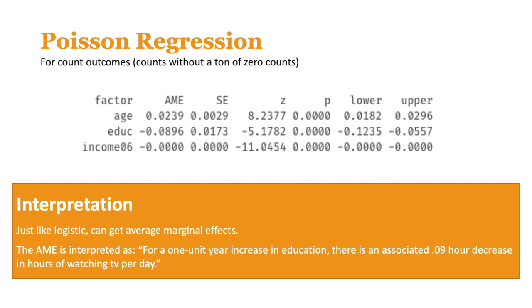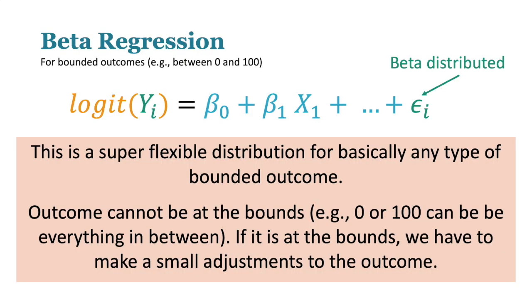That's Poisson — for counts without a ton of zeros. Another one is beta regression, one of my favorites. It's for bounded outcomes, like between 0 and 100. If you're looking at test scores that are nicely normally distributed in the middle with no one at the top or bottom, you don't have to use beta regression. But it's really good when you have people at the very top or bottom, or there's a weird distribution, which happens a lot with bounded outcomes. The beta distribution is very flexible and can handle a lot of different shapes.